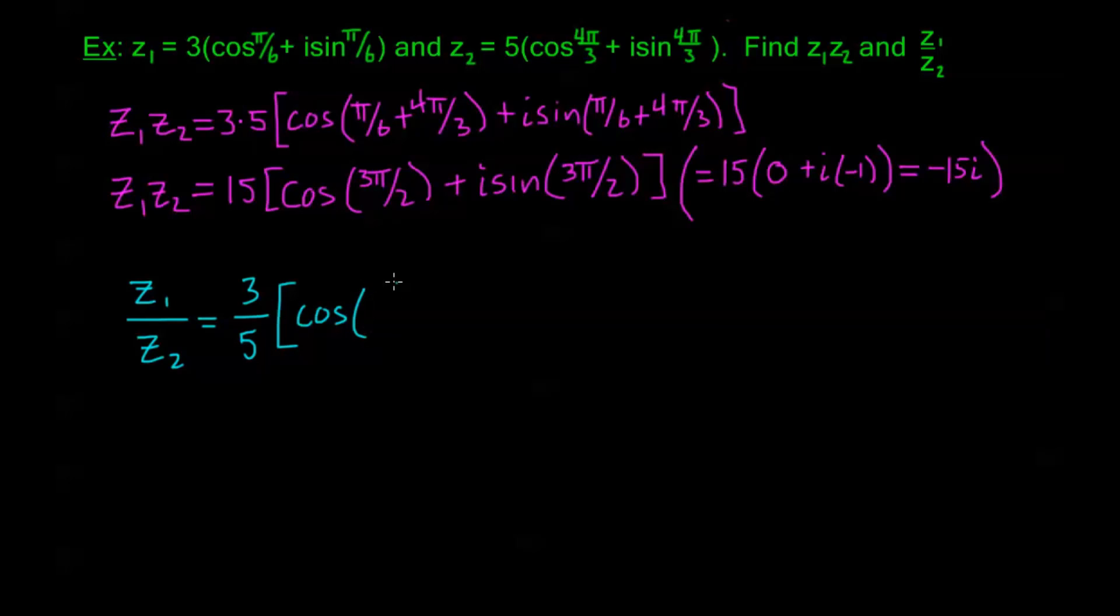Now we're taking the difference of our arguments. But remember, we always take the argument of the numerator first, so my theta for Z₁ was π/6, and I subtract from that my theta of Z₂, which is 4π/3. Then I have plus i sin(π/6 - 4π/3).